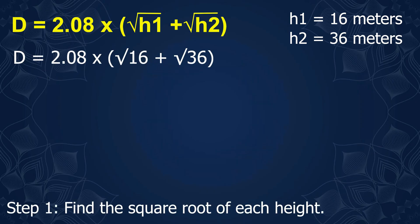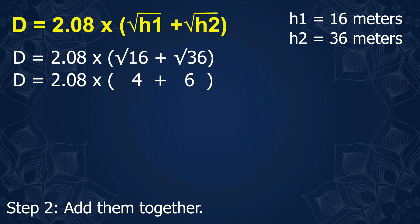Step 1. Find the square root of each height. The square root of 16 is 4. The square root of 36 is 6. Step 2. Add them together. 4 plus 6 equals 10.